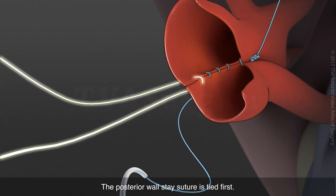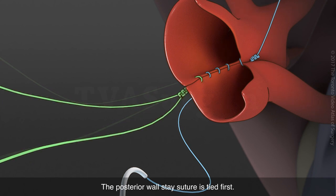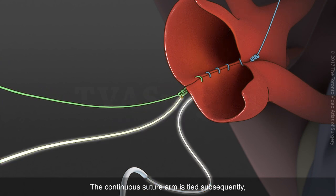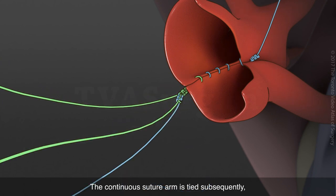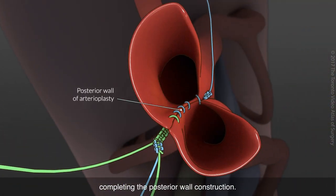The posterior wall stay suture is tied first. The continuous suture arm is tied subsequently, completing the posterior wall construction.